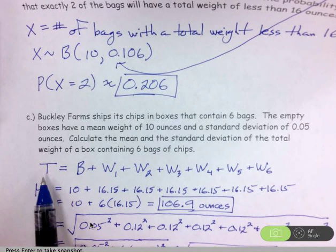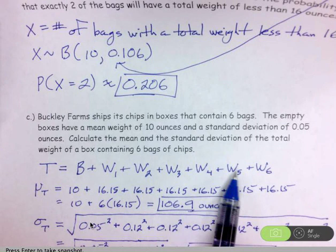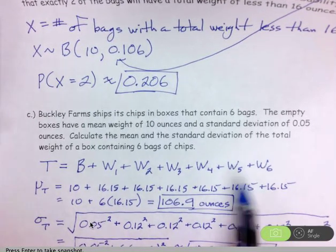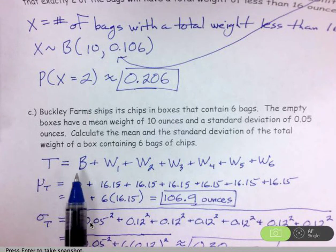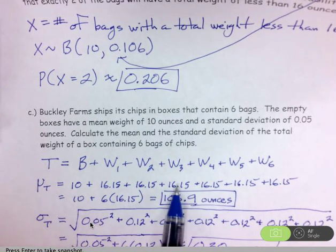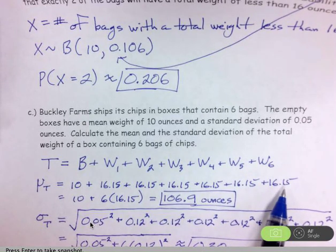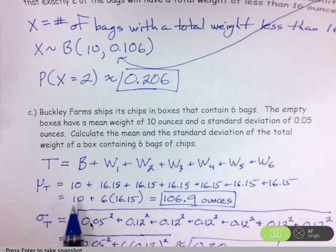So my total weight includes the box and then one, two, three, four, five, six bags of chips. So the mean for the total is literally found by just combining all of those means together. Here is the mean for the box, 10 ounces. Each of the bags of chips has a mean of 16.15 ounces. If you add all of those up, you get 106.9 ounces.